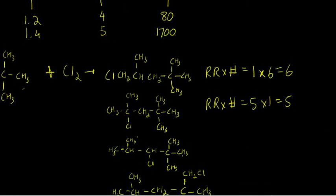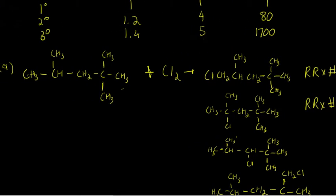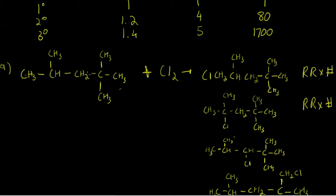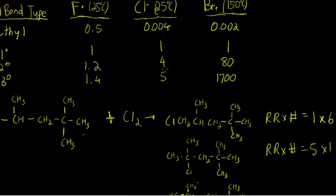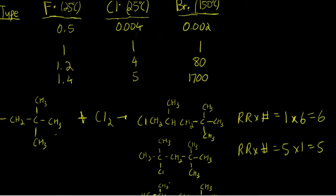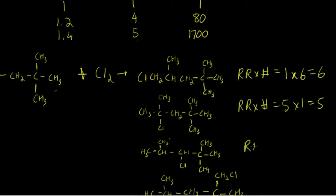Now looking at this product — it results from substitution of a secondary hydrogen; one of these two hydrogens is being substituted with a chlorine. Referring to the table, secondary hydrogens have a relative reactivity of four with chlorine. So relative reactivity times the number is four times two, and you get eight.